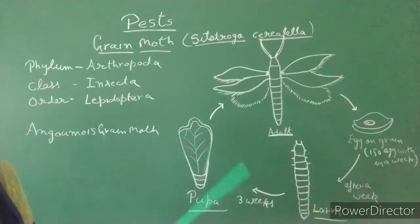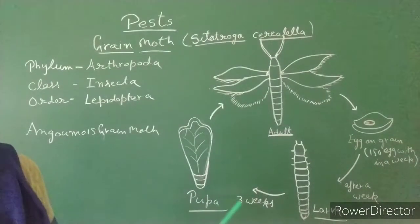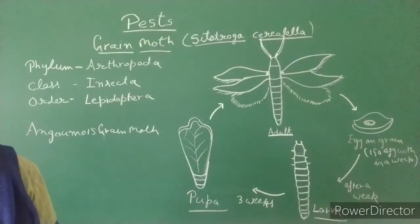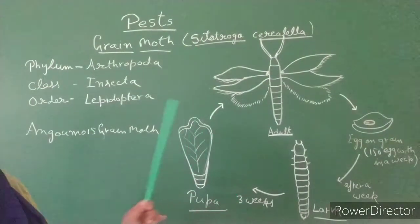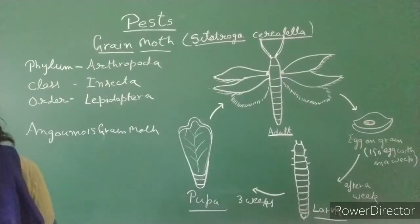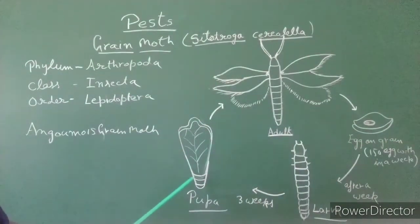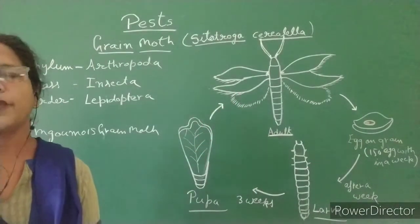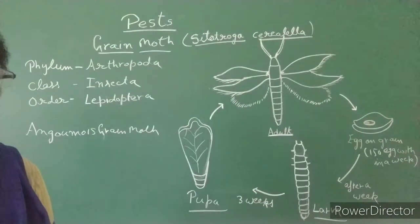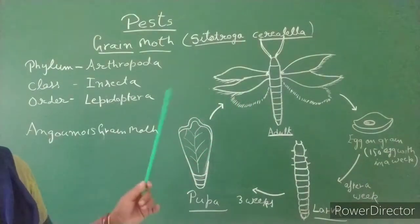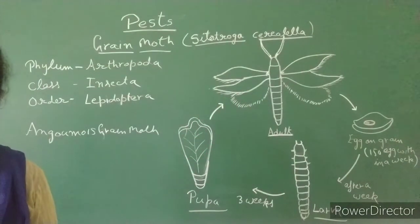The larvae feed on the grain contents, hollowing out the seeds. After feeding, the larva enters the pupal stage inside the grain. It then transforms into an adult from the pupa. After emergence, it starts its reproductive cycle again. In one year, many generations are produced, which causes severe damage.